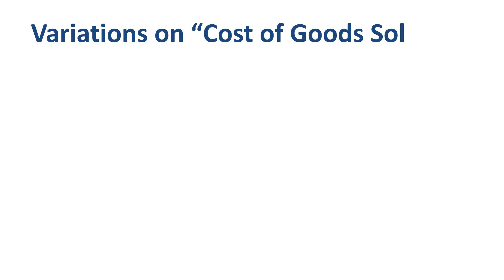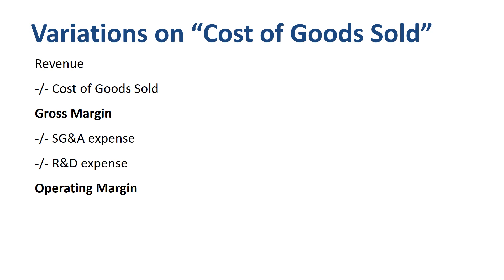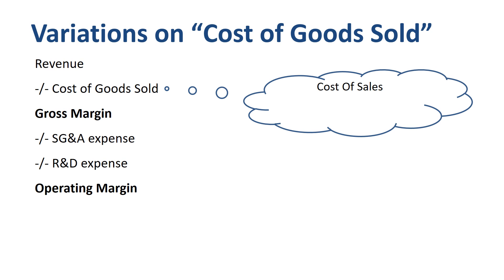What happens if you are not working in a manufacturing company, but in an industry like services or software? Most of the P&L looks the same, but your company probably has a term like cost of sales, cost of services sold, or cost of revenue, replacing the cost of goods sold that a manufacturing-based company would use.